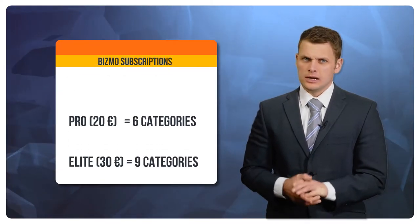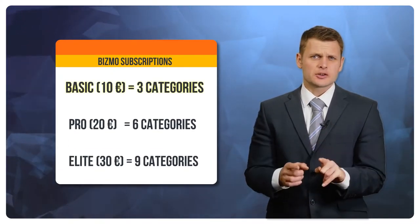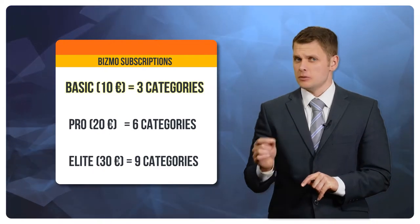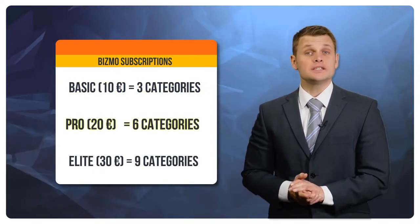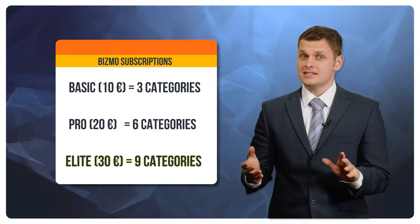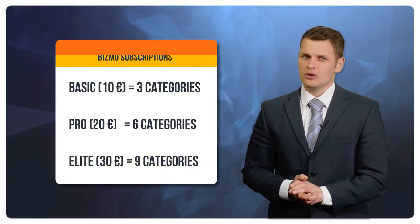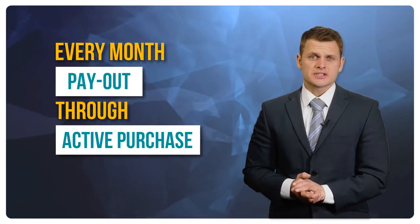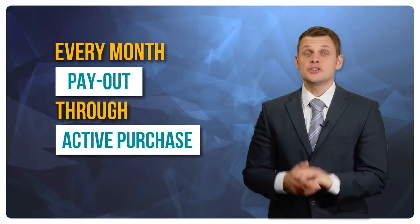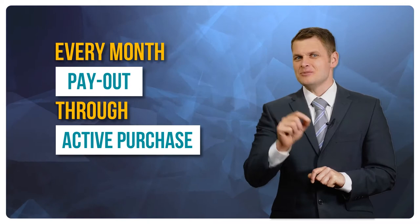Basic gives you three categories for 10 euros per month. Pro gives you six categories for 20 euros a month. Elite gives you all nine categories for 30 euros a month. An active purchase turns your virtual income into real income which can be paid out at the end of the month. It's your choice.